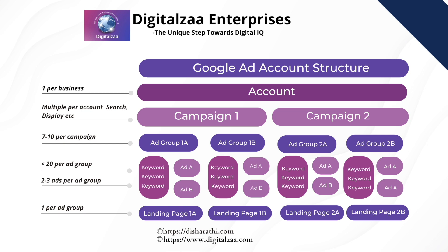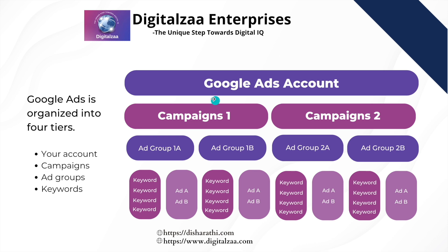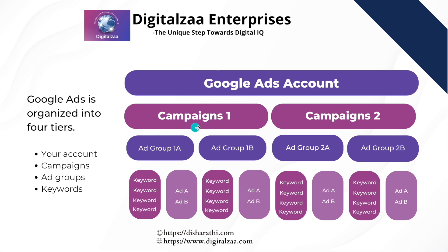I know this sounds very complicated if you are a beginner — you will feel overwhelmed. I recommend you learn it one step at a time. This is just an overview. When you practice Google Ads you will understand it better. For now, just remember: the Google Ads structure is set up in four layers — Google Ads account, campaigns, ad groups, and keywords/ads.